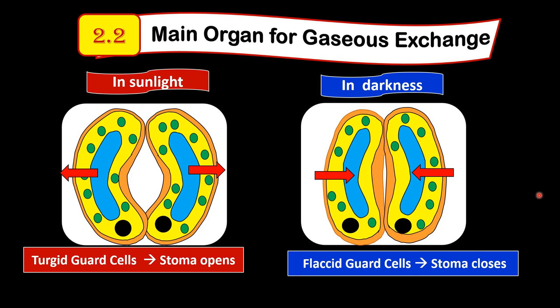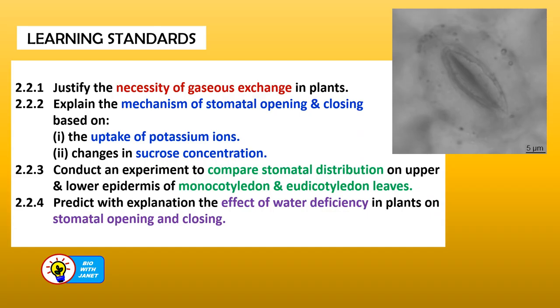In sunlight, guard cells become turgid and the stoma opens, whereas in darkness guard cells are flaccid and the stoma closes. Let's find out more about how this happens.